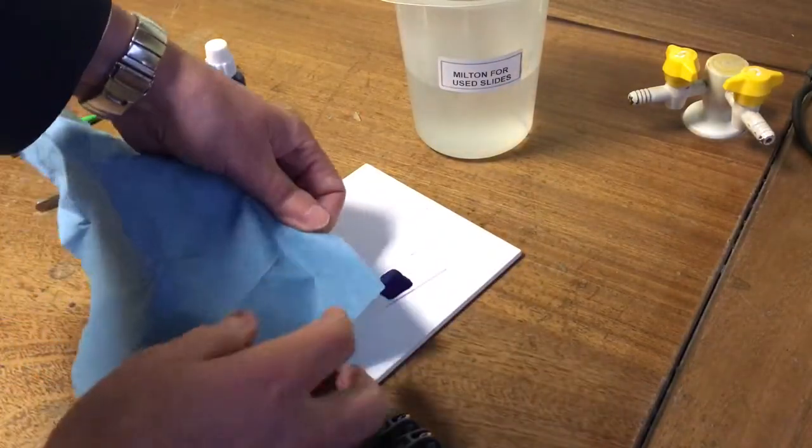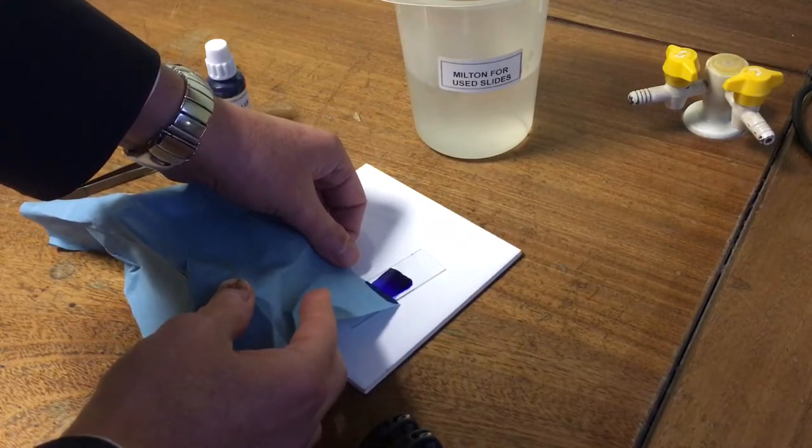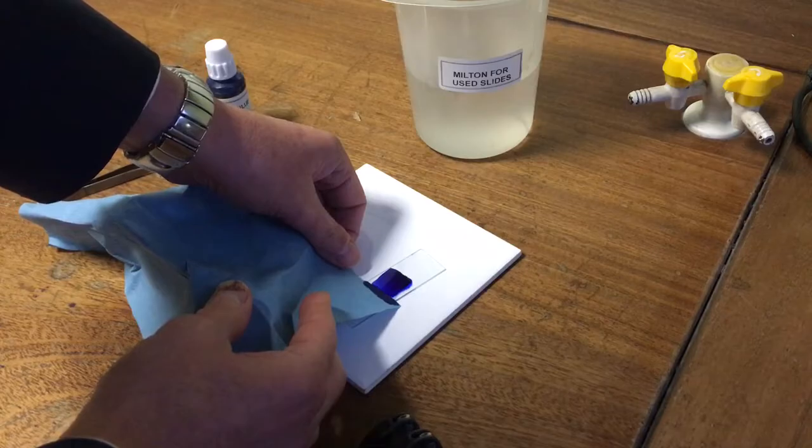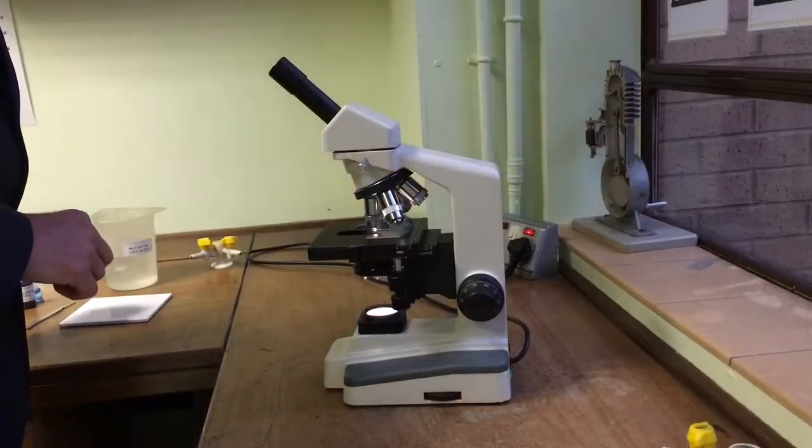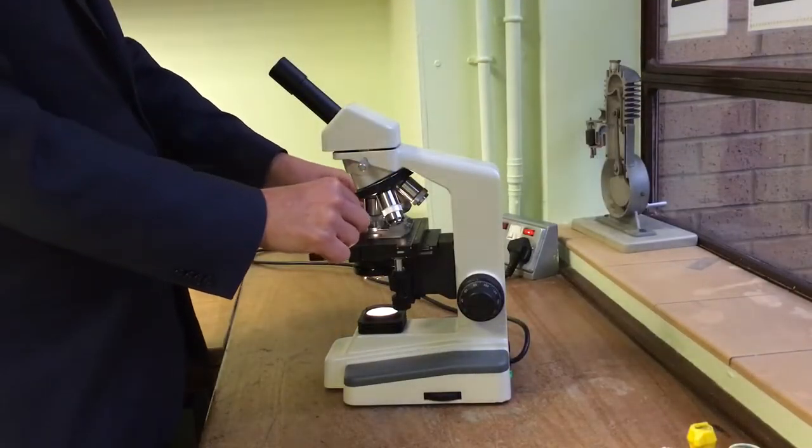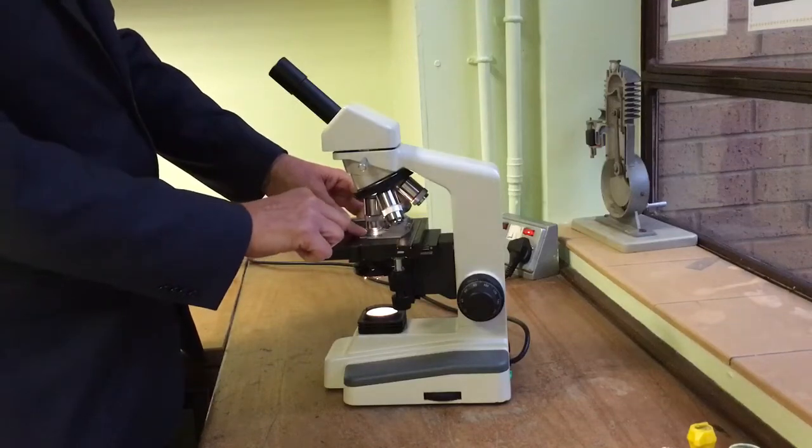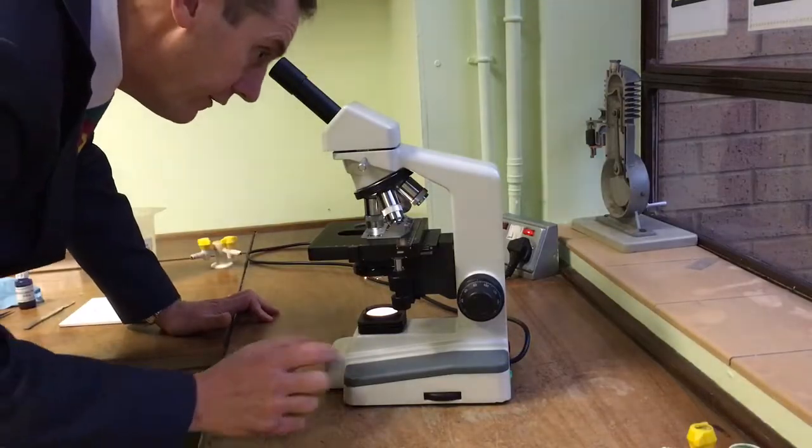And it will make the slide very dark under the microscope. So I'm going to use a paper towel to just absorb the excess stain. I've removed the excess stain from this slide, and now I'm going to place it onto the microscope stage. Like so. And now it's ready to view.